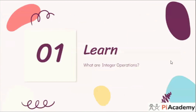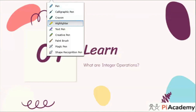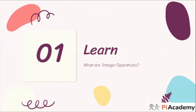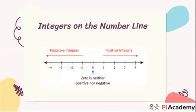Let's begin the first section: learning. Our first question is about what are integer operations. Before starting, we must know two terms: the first one is 'integer' and the next one is 'operation.' On a number line - there is a line on which we are representing numbers, so that's why it is called a number line.